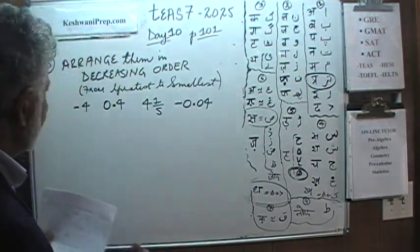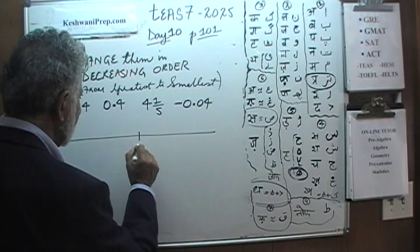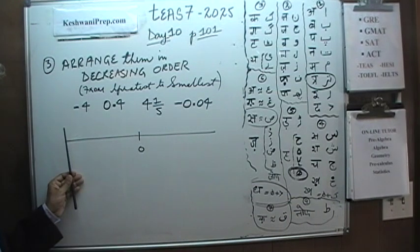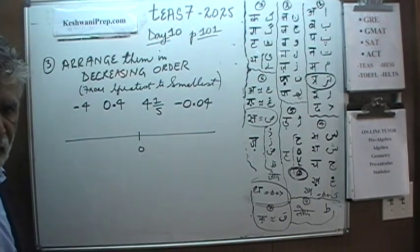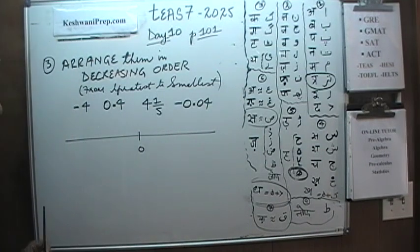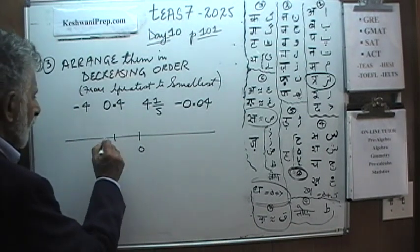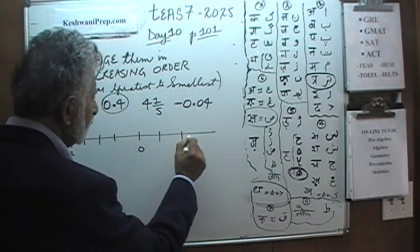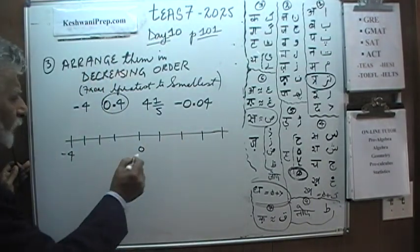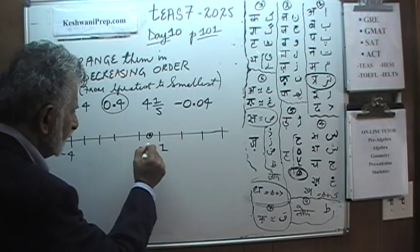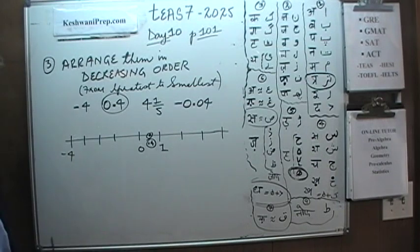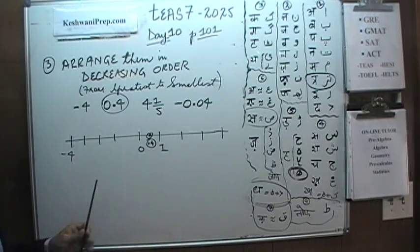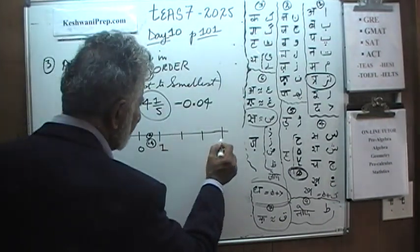So here is our zero. Anything that goes to the left of zero is negative, and as we move to the left the numbers get smaller. As we move to the right, numbers get larger. Let's begin. Negative four is going to be way over here. Then we have point four — point four is somewhere about halfway between zero and one, because point five is exactly halfway. Then we have four and one-fifth; the fact remains that four and one-fifth is going to be somewhere over here to the right.